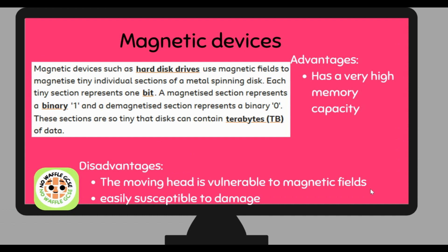Magnetic devices include hard disk drives (HDDs). These use magnetic fields to magnetize tiny individual sections of a metal spinning disk. Each tiny section represents one bit — a magnetized section represents a binary one and a demagnetized section represents a binary zero. These sections are so tiny that one single disk can contain terabytes of data. The advantage is very high memory capacity; disadvantages are that the moving read head is vulnerable to magnetic fields and the device is susceptible to damage, making it not very portable.